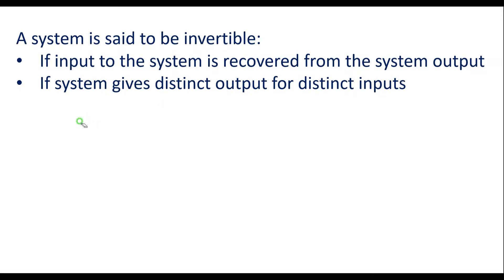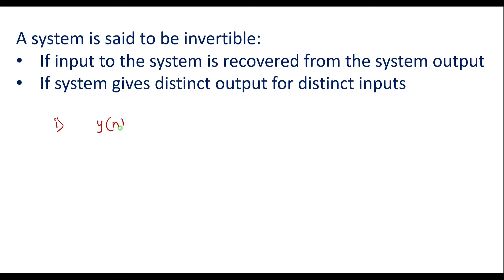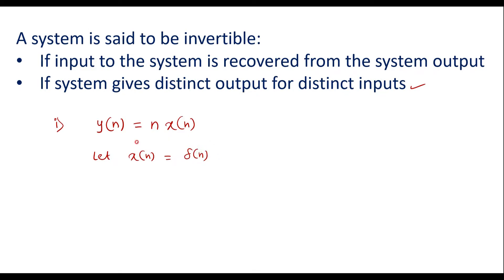Now let me take the first example: y of n is equal to n times x of n. We will consider the second definition — that is, if the system gives distinct output for distinct inputs. Let x of n be the input and y of n be the output. Let the input x of n be delta of n. So in that case, y of n is equal to n times delta of n.